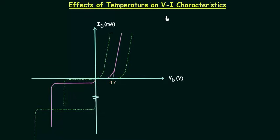In the last lecture we completed Volt Ampere characteristics of a PN junction diode. In this lecture we will discuss effects of temperature on VI characteristics. On increasing or decreasing the temperature, the Volt Ampere characteristics of a diode change significantly. The effect of temperature is different for both forward bias and reverse bias conditions.